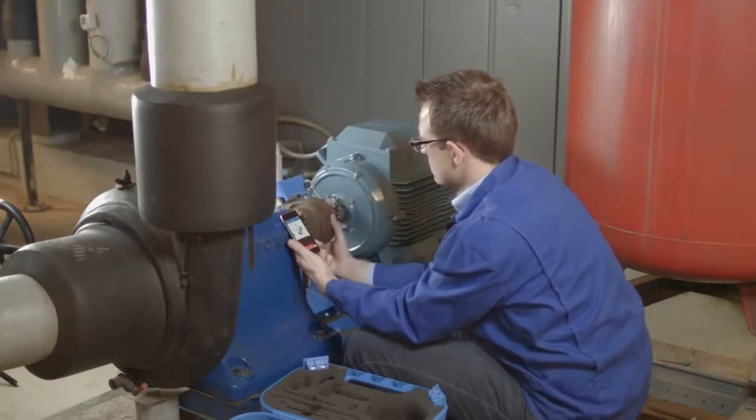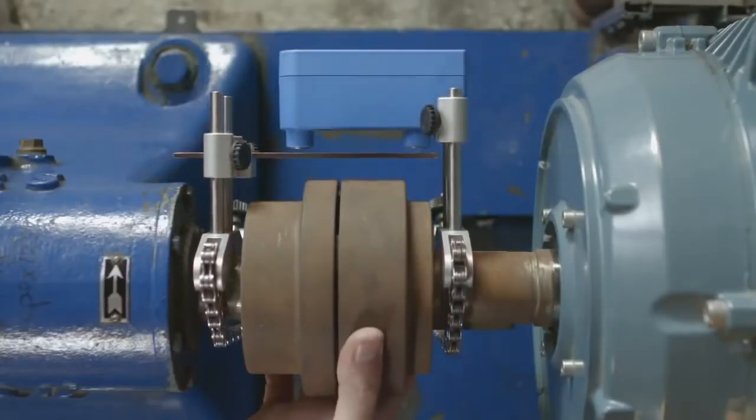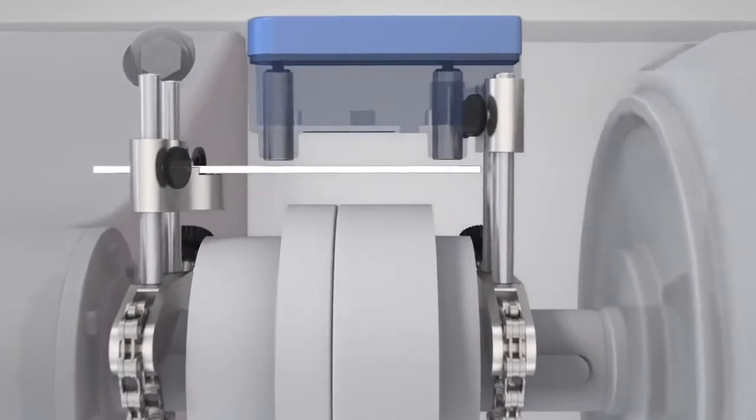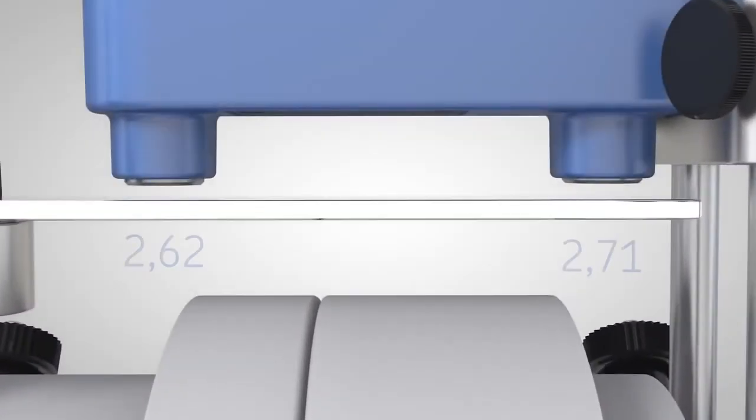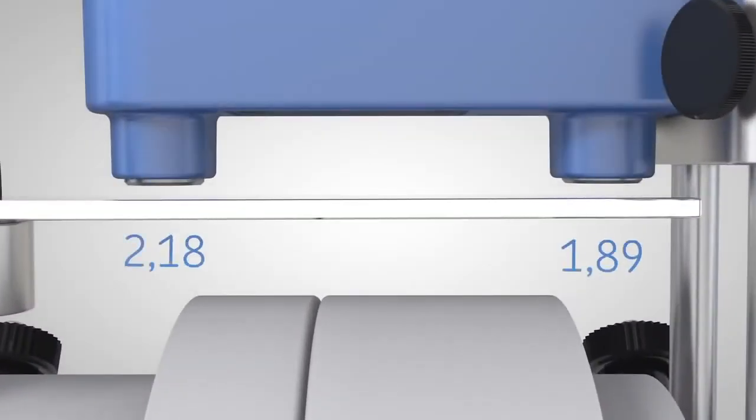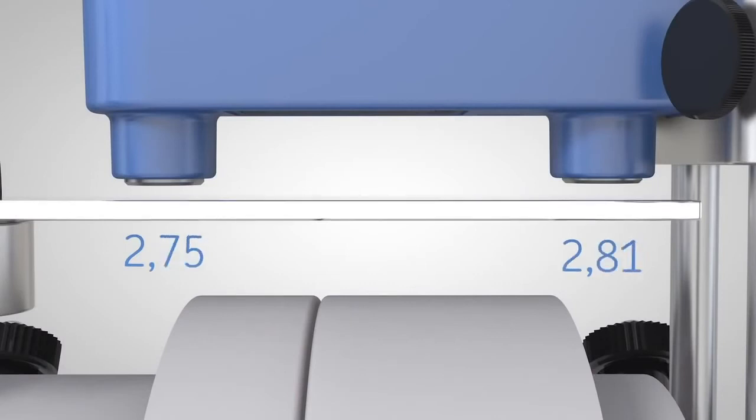The two inductive proximity sensors inside the instrument measure the distance to the reference bar. Just like the dial gauges method, misalignment causes these distances to change and allows the calculation of the misalignment using the TKSA 11 app.